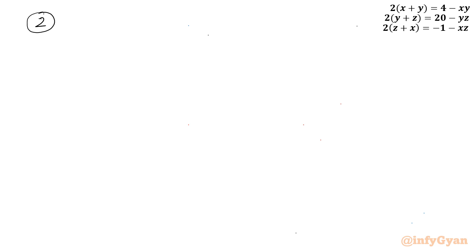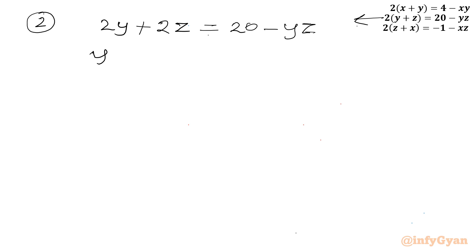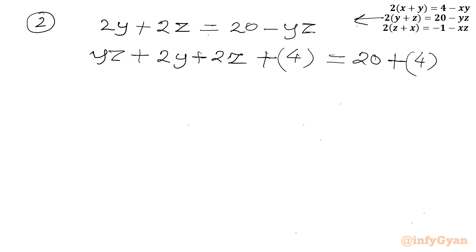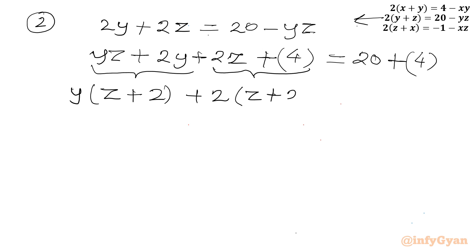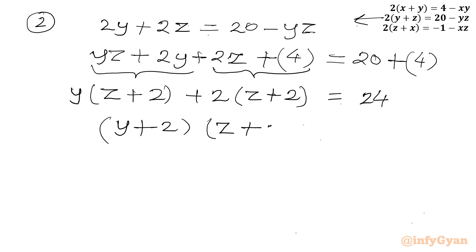Similarly I will write our second equation: 2(y+z) = 20 minus yz. I take the negative yz to the LHS, writing yz plus 2y plus 2z, then add 4 to both sides. From the first two terms y is common, giving bracket (z+2), and from the other two terms I take 2 common, again giving (z+2). The right hand side is 20 plus 4 equals 24, so I can write (y+2)(z+2) = 24. This is equation number 2.